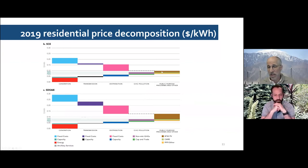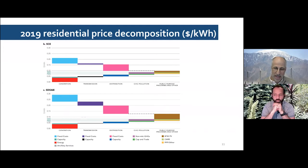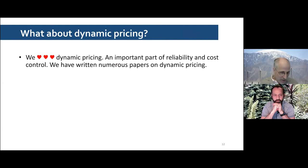We did similar analyses for Southern California Edison, which has had much less behind-the-meter solar, and for San Diego Gas and Electric, which has had much more. San Diego is in the southern part of the state with a great solar resource and lots of single family homes with good roofs for it. They've had a huge build-out of rooftop solar — about 20% penetration, which is competitive with Australia.